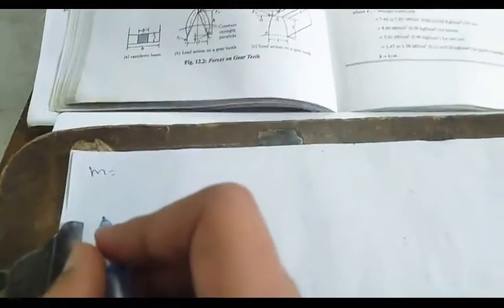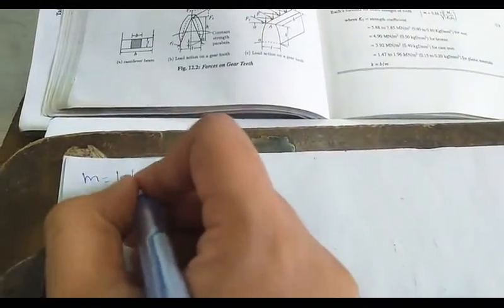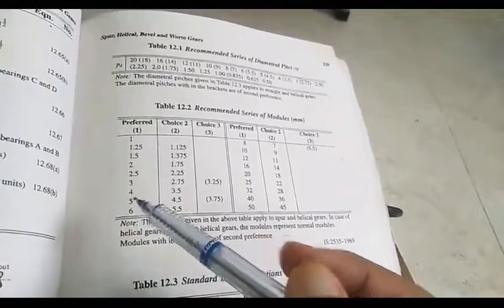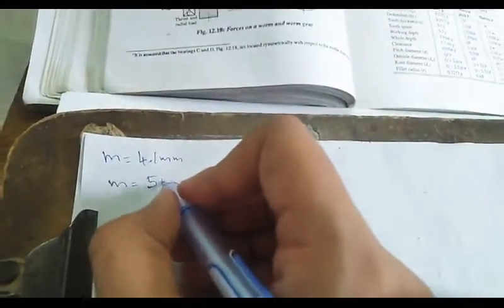The value of module, which we get by solving the equation, is 4.1 mm. From the standard table 12.2, recommended series of modules, we have got 4.1. We shall take the value of 5, since we usually take higher values of module so that the design will be safe.